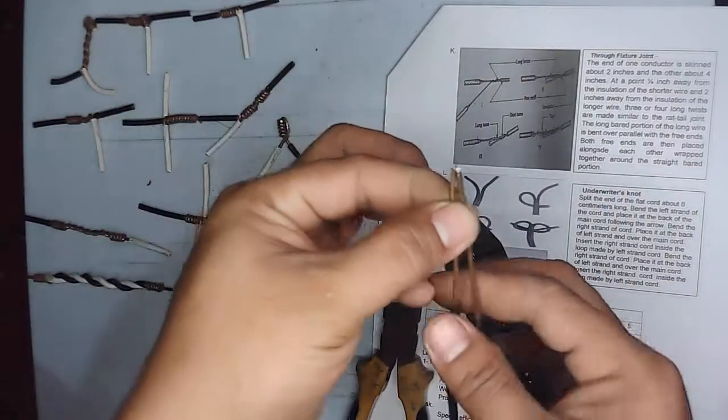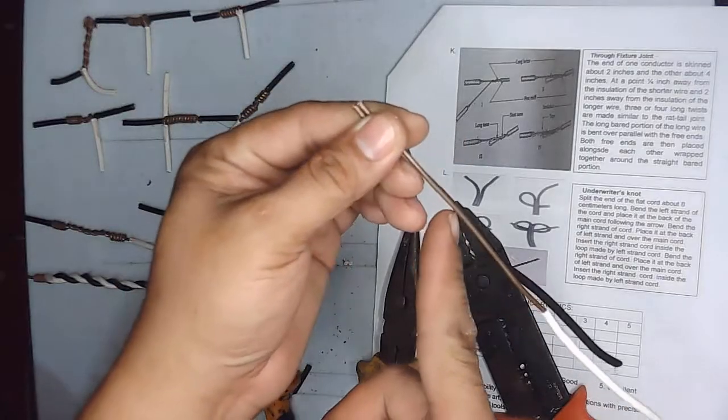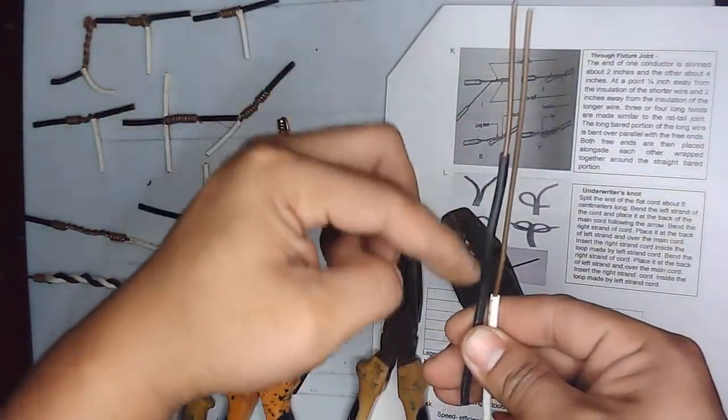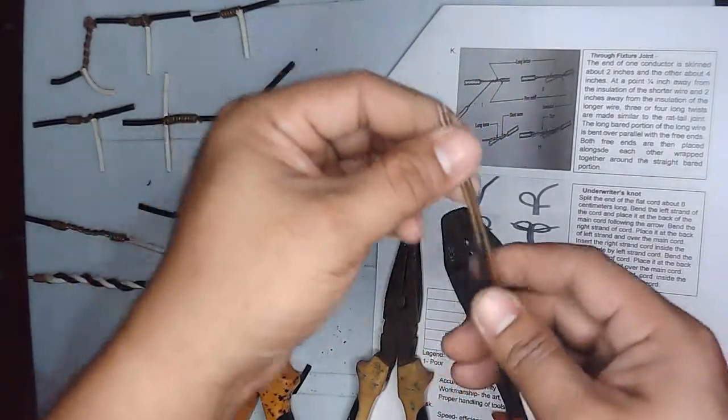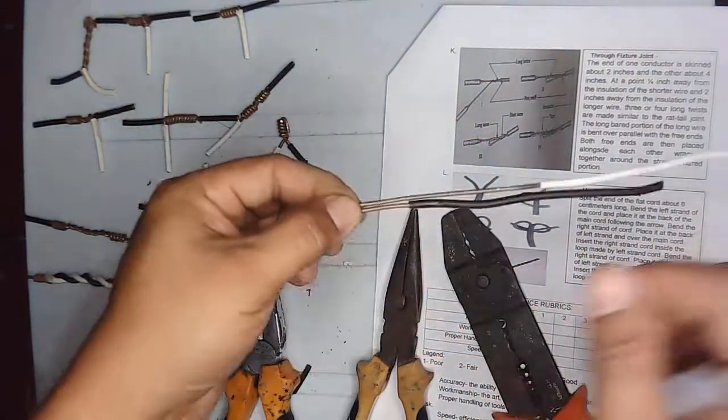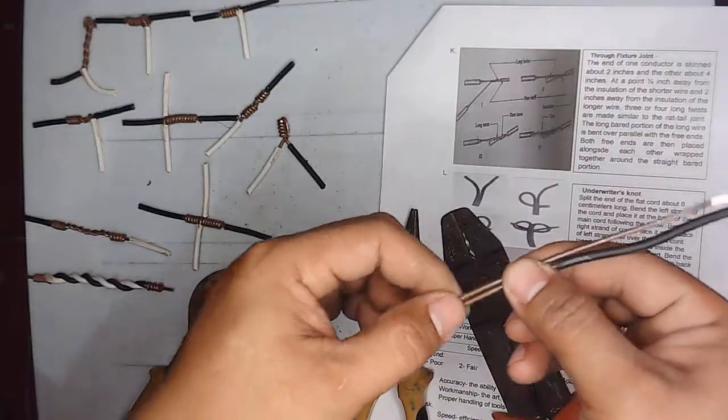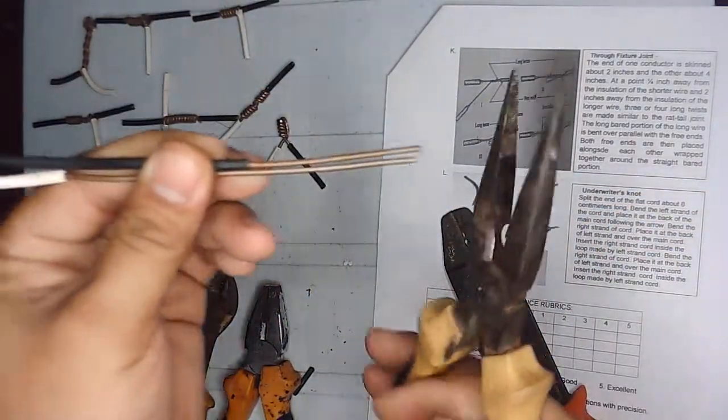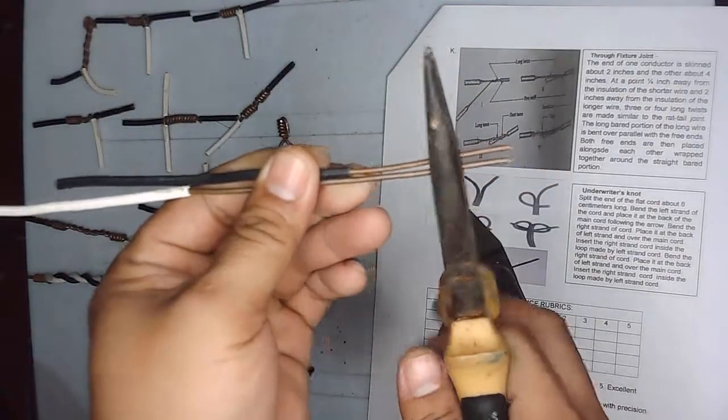So the longer wire is stripped about four inches and the shorter wire is stripped about two inches. Next, we'll place them at the same length so the bare wires are at the same height.